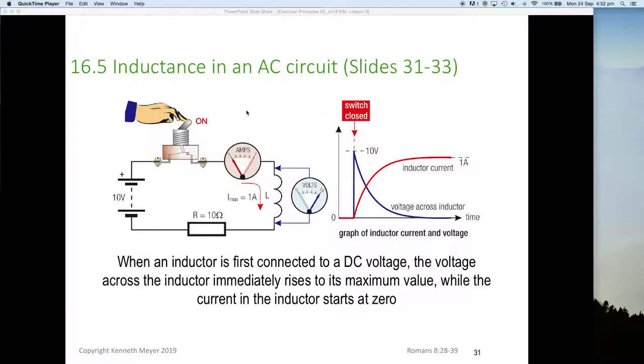So with an inductor, when an inductor is first connected to a DC voltage, the voltage across the inductor immediately rises to its maximum value, while the current in the inductor starts at zero. This all has to do with magnetic fields, because that's how an inductor stores energy.